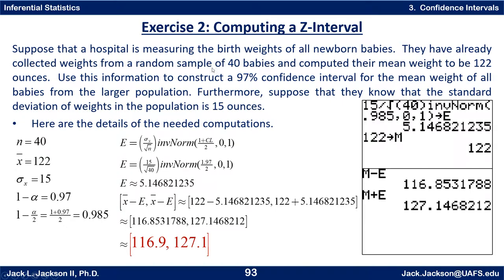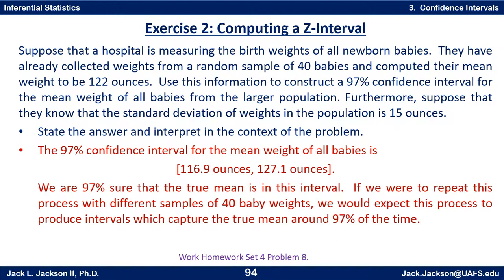Rounding to one decimal place, the interval is 116.9 to 127.1 ounces — the same units as x-bar. The 97% confidence interval for the mean weight of all babies is 116.9 ounces to 127.1 ounces. We're 97% sure the true mean is in this interval. In other words, if we were to repeat this process with different samples of size 40 baby weights, we would expect this process to produce intervals which capture the true mean around 97% of the time. Come back for the next video and we'll look at some technology shortcuts.